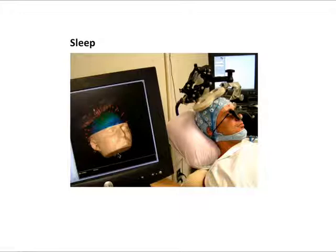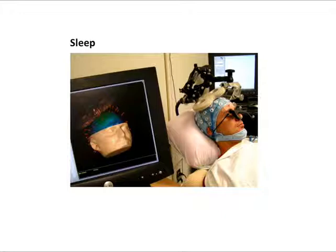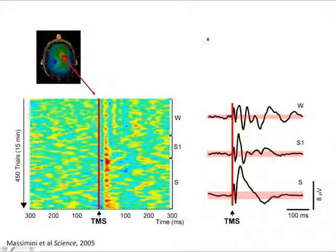Now let's see what happens when somebody falls asleep. The experiment setup is simple. We prepare the subject, set the coil. We use noise masking to prevent the subject from hearing the click of TMS, and we try to stimulate regions close to the midline to avoid muscle artifacts. The experiment is simple: we stimulate during wakefulness, collect a sufficient number of trials for a solid average, and then let the subject fall asleep and continue the stimulation.